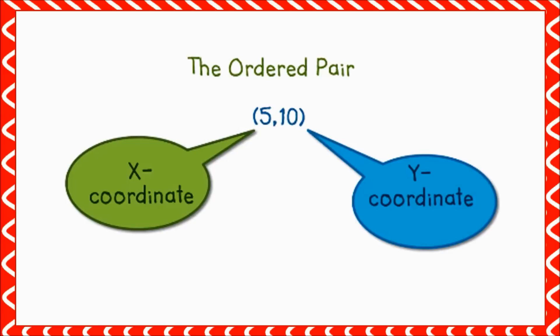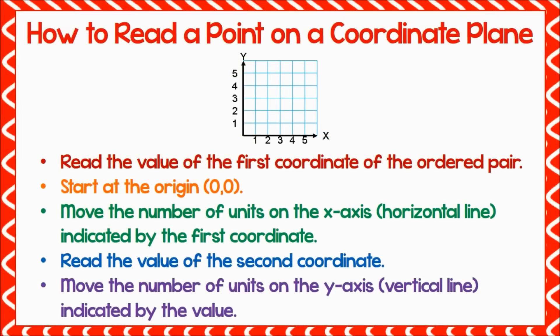Students sometimes move up the y-axis first instead of over on the x-axis first. It is important for students to understand the first number indicates how far to travel from the origin in the direction of the x-axis, and the second number indicates how far to travel in the direction of the y-axis.